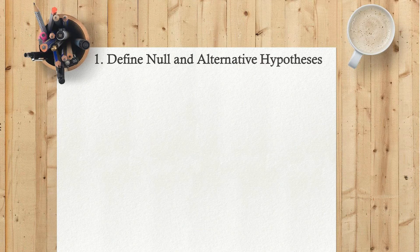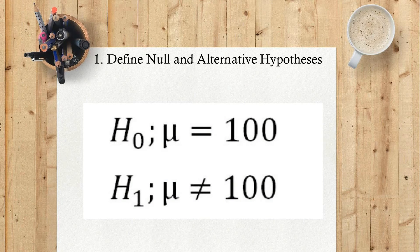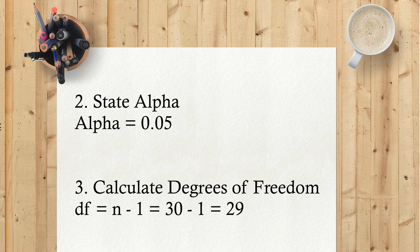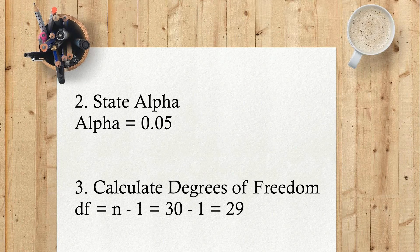Let's begin. 1) Define null and alternative hypotheses. H₀: μ equals 100. H₁: μ not equals to 100. 2) State alpha: α equals 0.05. 3) Calculate degrees of freedom: df equals n minus 1 equals 30 minus 1 equals 29.